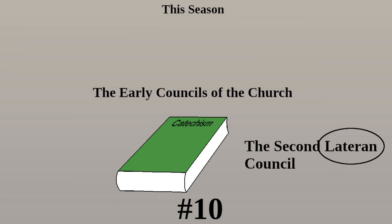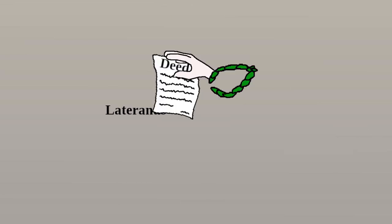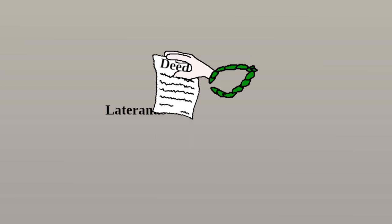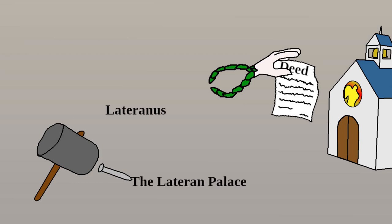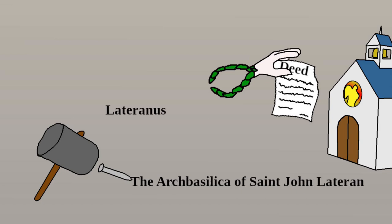The name comes from an old Roman family, Lateranus, who lost their property to Emperor Constantine, who in turn later gave it to the church. On that land, which was part of Rome, several buildings were constructed, including the Lateran Palace, the Pontifical Lateran University, and the earliest of all the Christian basilicas, the Archbasilica of St. John Lateran.